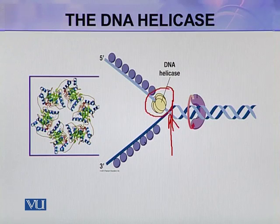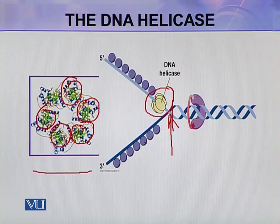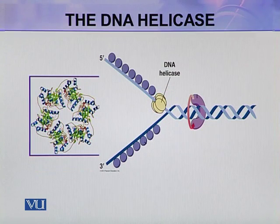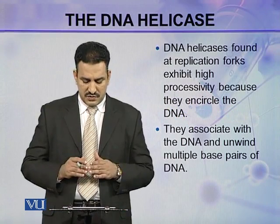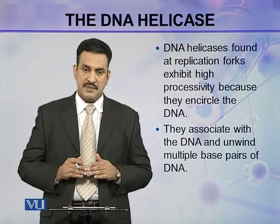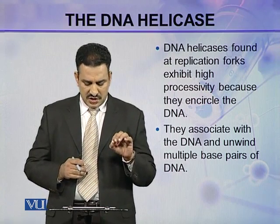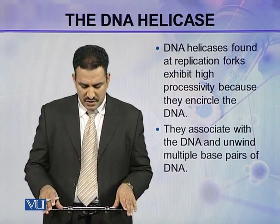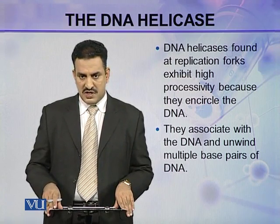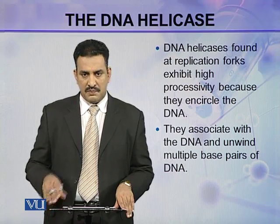If you see the three-dimensional structure of this DNA helicase, you can clearly see there are six domains or six subunits in this protein — it is a hexameric protein present in the form of a ring. DNA helicases found at the replication forks exhibit high processivity because they encircle the DNA. They associate with the DNA and unwind multiple base pairs, which means they have high processivity.